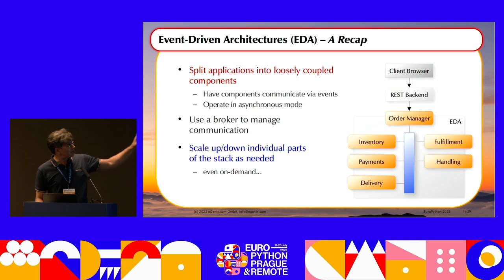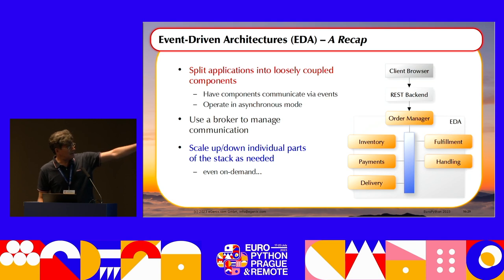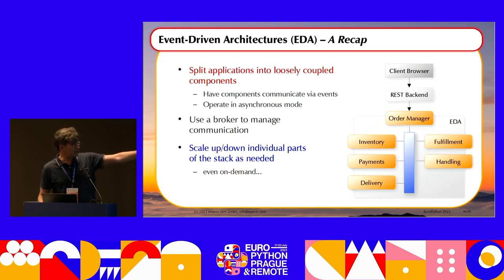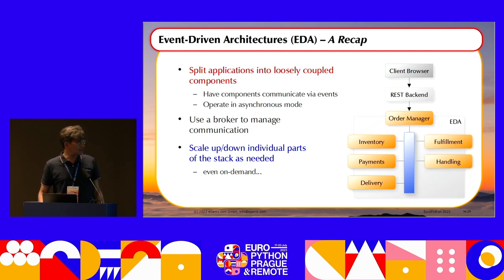Let's do a recap of the architecture. Event-driven architecture is actually quite easy to understand. You can split applications into loosely coupled components, which is great for scalability — you can easily scale up and down. As shown on the right, you still have a REST backend, but it doesn't actually process anything anymore — it just creates and takes messages. You have something called an order manager that ensures all messages get properly processed through different stages, and it sends back the reply to the REST backend.